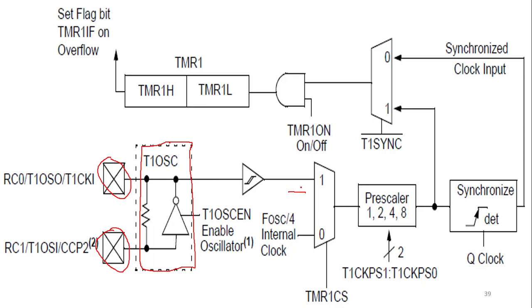There is a multiplexer used for deciding the clock source. TMR1CS selects the Timer1 clock source, with two options: the internal clock source (F_oscillator divided by 4) or the external clock signal applied from the external pins. To select the internal clock, TMR1CS is set to 0; to use the external clock signal, TMR1CS is set to 1.